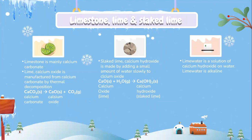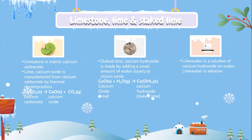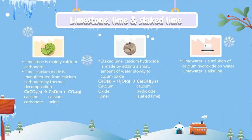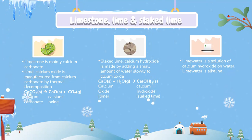Slaked lime, which is calcium hydroxide, is made by adding a small amount of water slowly to calcium oxide. From the chemical equation: CaO + H2O → Ca(OH)2, which is slaked lime. Lime water is a solution of calcium hydroxide in water, and lime water is alkaline.